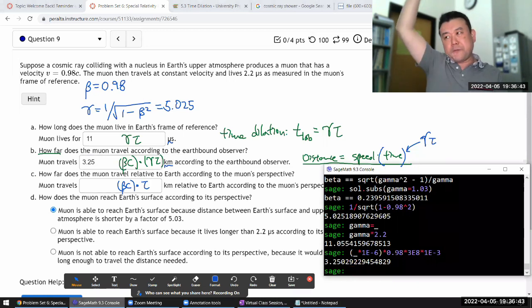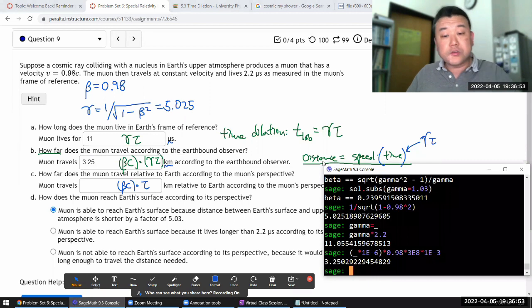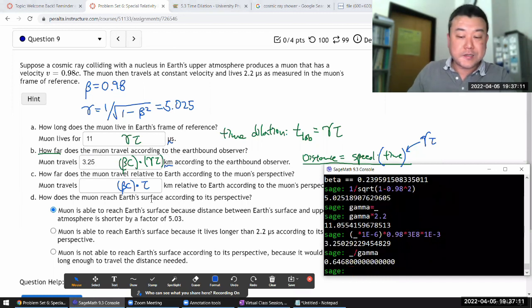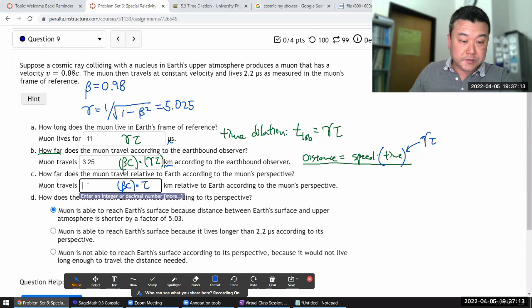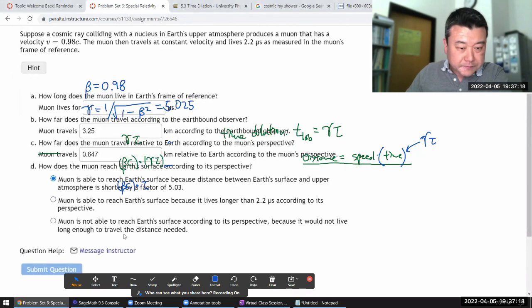Muon produces way up in the upper atmosphere, have not as good a chance of reaching the ground. How far does the muon travel relative to Earth according to muon's perspective? So that's comparing these two expressions. They are different by gamma. So I can take this last answer divided by gamma, which is 5.08. I wrote it down. Gamma. So 0.647 kilometers. That shouldn't be it. Let's see. Good.